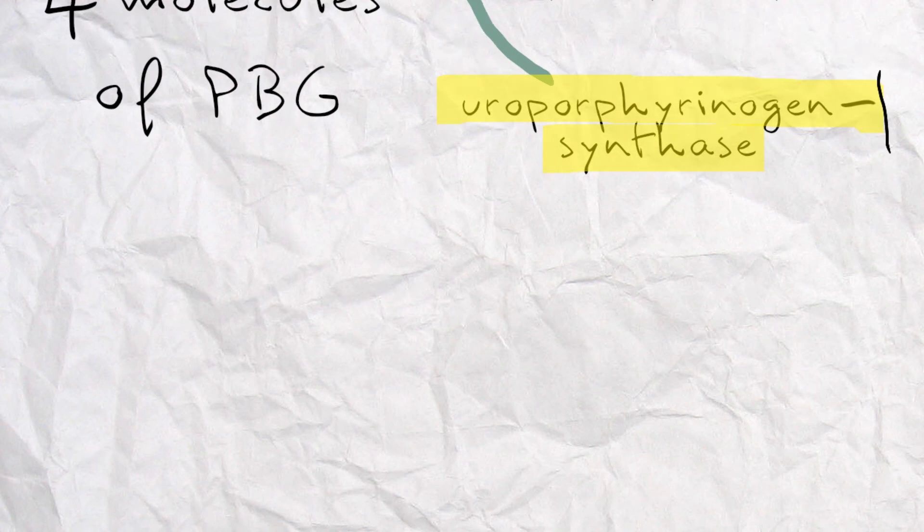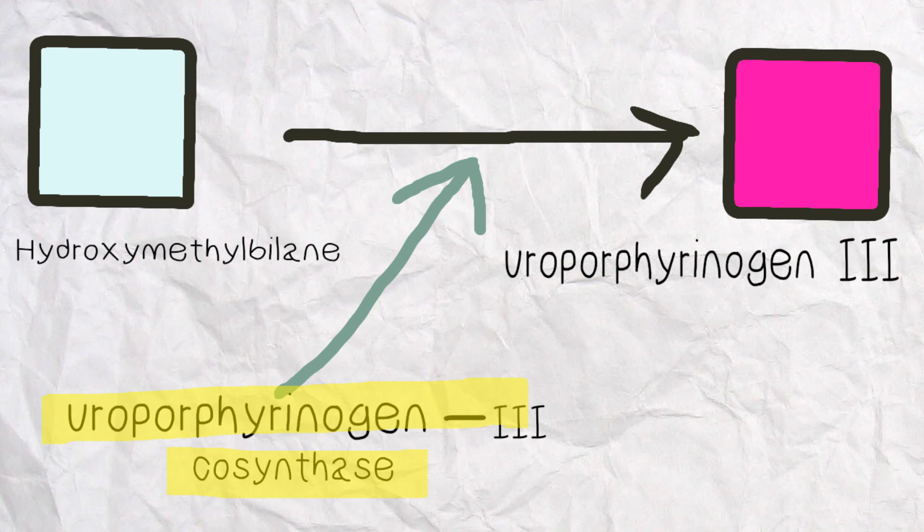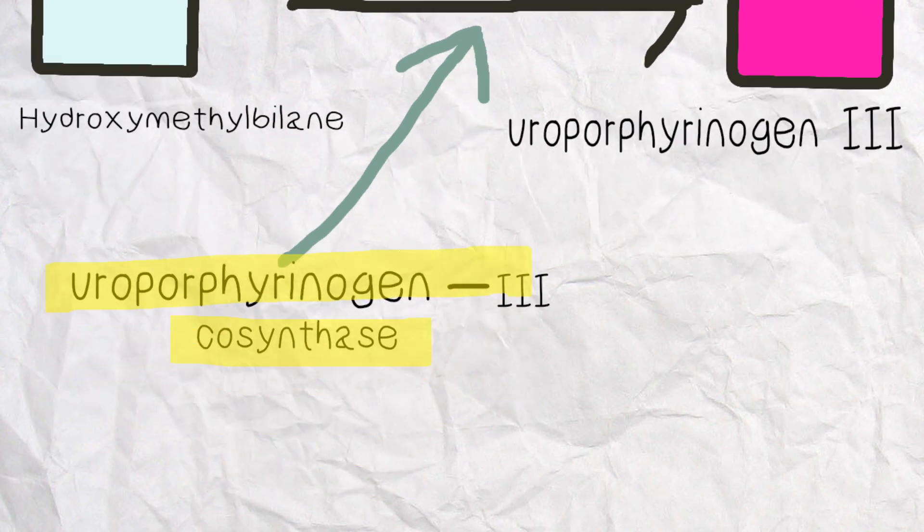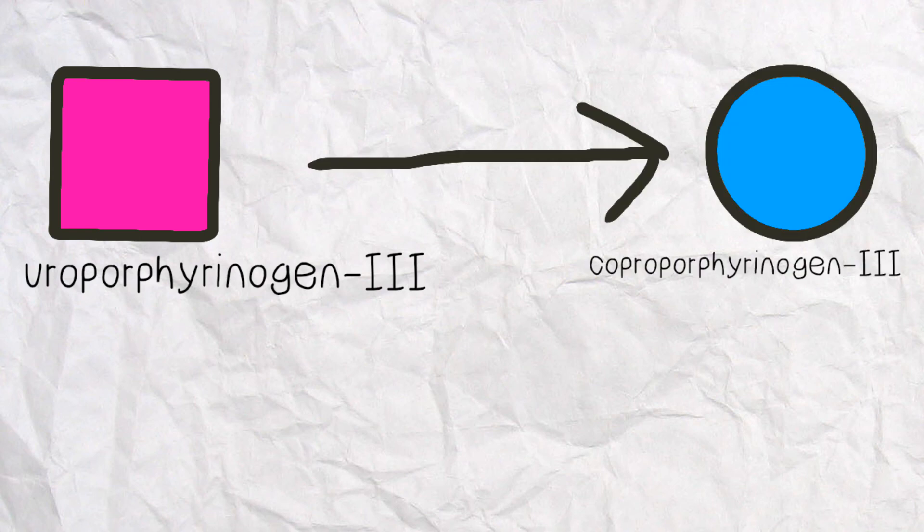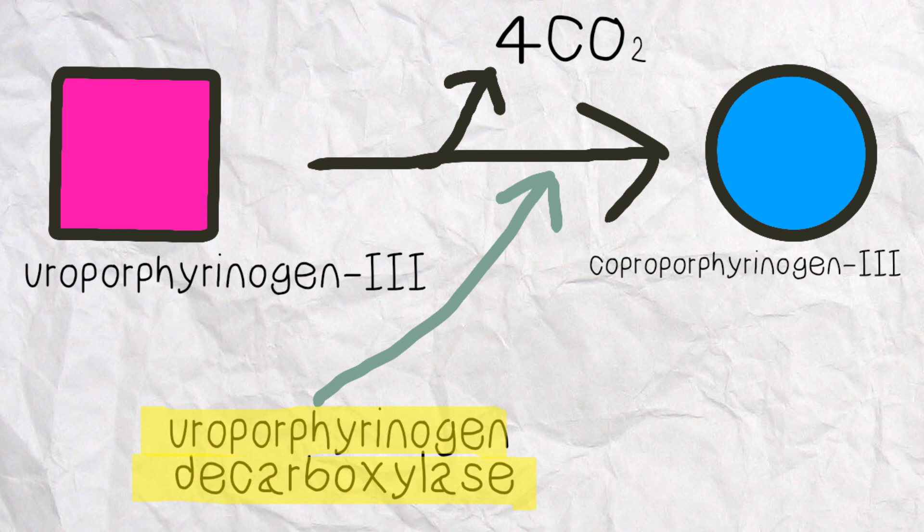Step 4: Hydroxymethylbilane will convert into uroporphyrinogen-III with the help of uroporphyrinogen-III cosynthase. Step 5: Uroporphyrinogen-III will convert into coproporphyrinogen-III with the help of uroporphyrinogen decarboxylase.